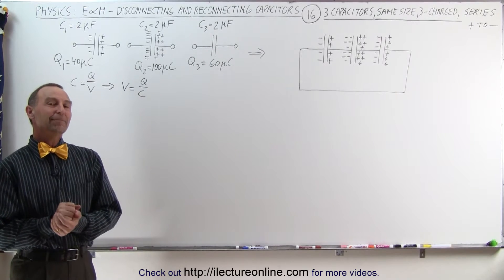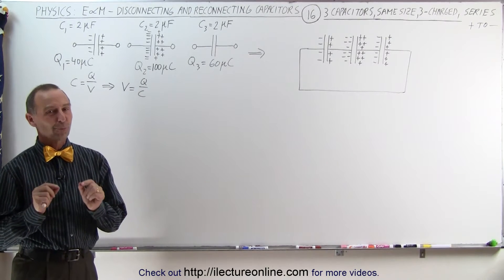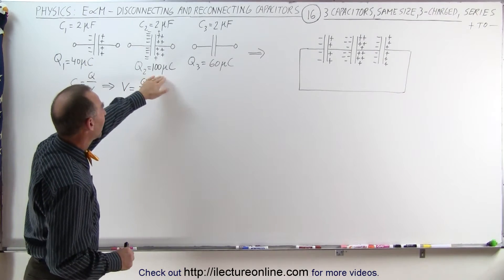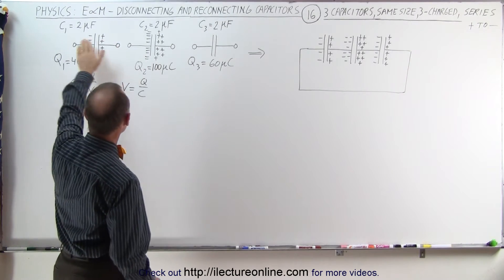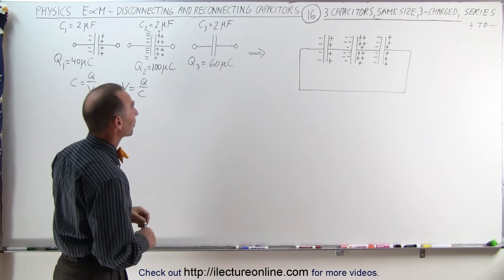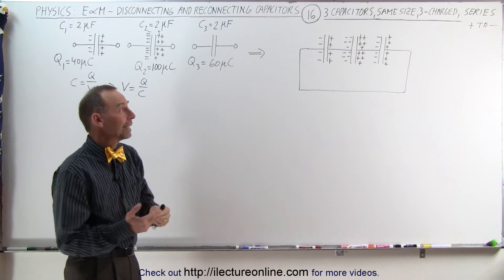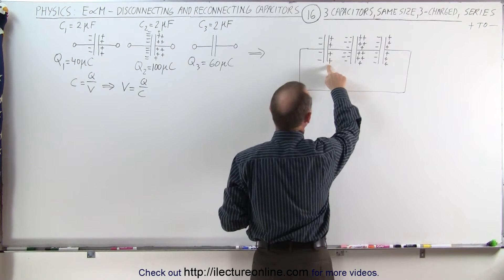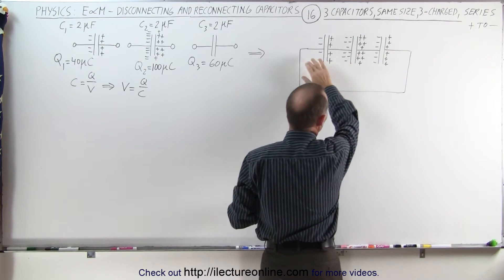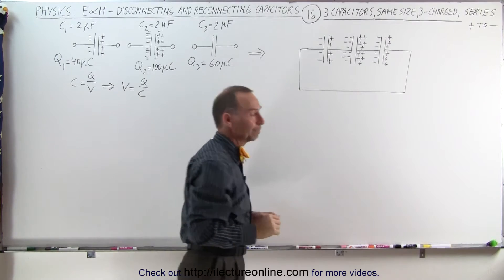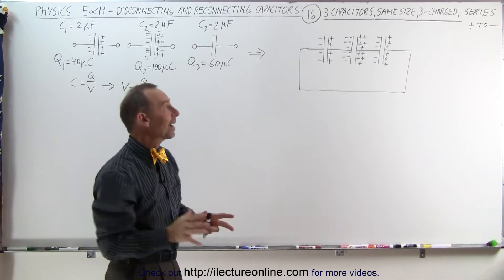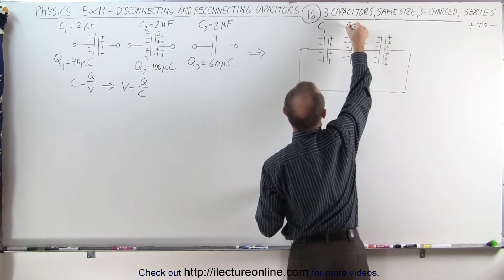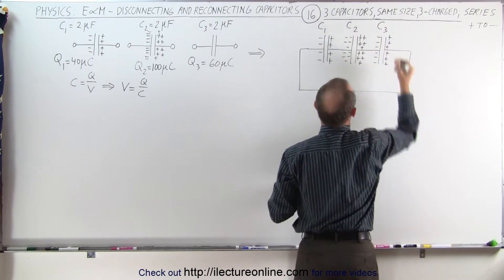Welcome to ElectronLine. In this example, all three capacitors have an initial charge of 40, 100, and 60 micro coulombs. They're all the same size — two microfarad capacitors — and we're connecting them in series. Notice that the positive end of one is connected to the negative end of the other, and we're consistent throughout the circuit. So now what we're trying to do is find the final charge on each of the three capacitors C1, C2, and C3.